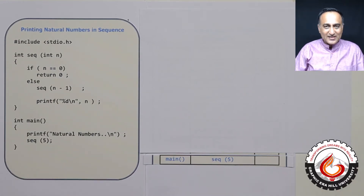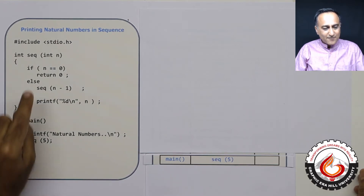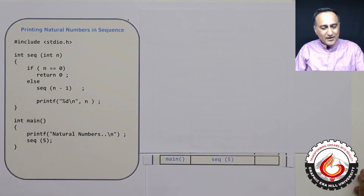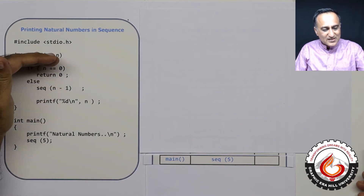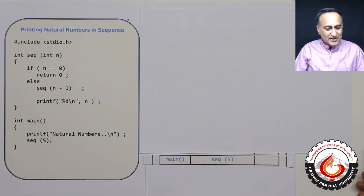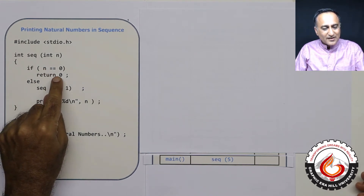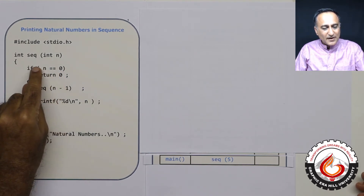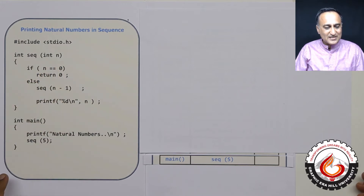That's all there is in this particular activation record. Now sequence(5) will get called here. This is the function you need to really understand. Till I reach zero, I am not doing a return. So this is my stop case, also called the base case.